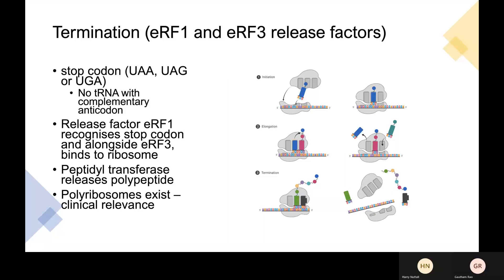In termination: when the ribosome encounters a stop codon — UAA, UAG, or UGA — and there is no tRNA with a complementary anticodon, eukaryotic release factor 1 (ERF1) recognizes the stop codon alongside ERF3, binding to the ribosome and forcing peptidyl transferase to add water to the peptide chain instead of an amino acid, freeing the polypeptide by hydrolysis and releasing it from the ribosome. Polyribosomes exist, leading to multiple initiations on mRNA simultaneously. mRNAs circularize, increasing the local concentration of ribosome subunits at the 5' cap and increasing translation efficiency.